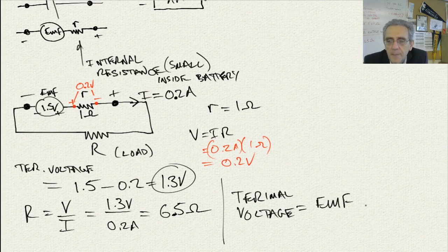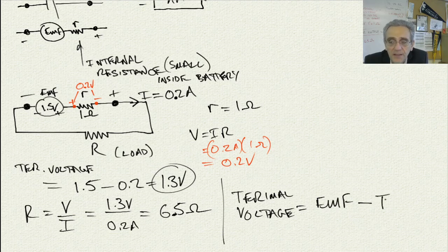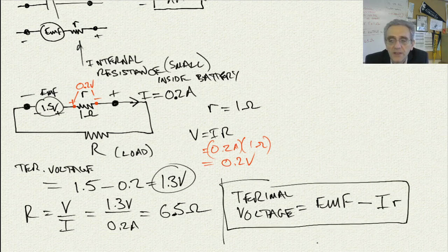minus the current that's flowing multiplied by the internal resistor. So this now is an equation that we can have that relates terminal voltage to EMF.